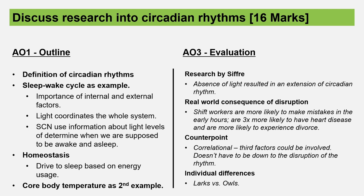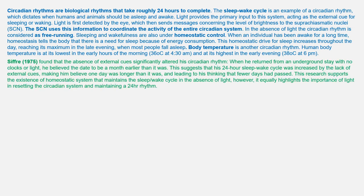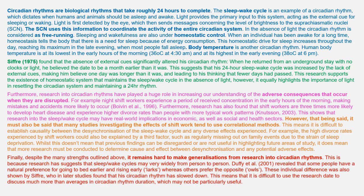The essay is going to look something like this. The outline is in blue, and all the bits in bold are the bits from the plan. Right at the end you've got core body temperature — about two sentences — and everything else is exactly as in the plan. Then you've got the four evaluation points: Siffre, followed by the adverse consequences of disrupting circadian rhythms in orange, the counterpoint, and the individual differences limitation in red.